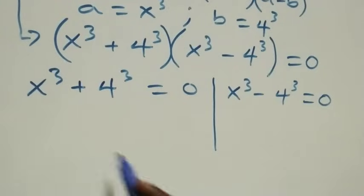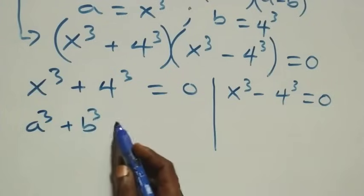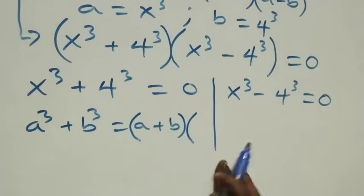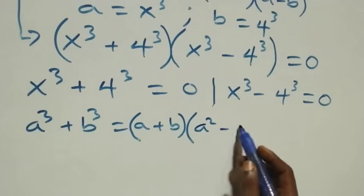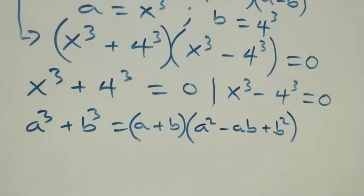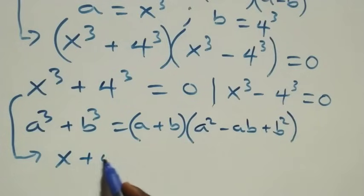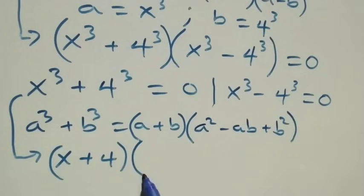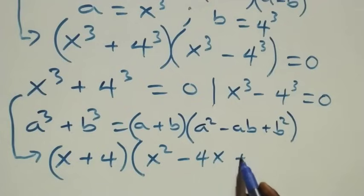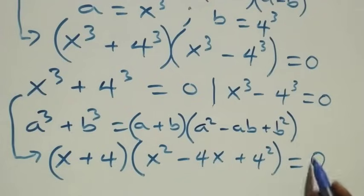Solving the first case, this follows from the sum of cubes: a³ + b³ equals (a + b)(a² − ab + b²). Applying this to what we have, we can write it as (x + 4)(x² − 4x + 4²) equals 0.